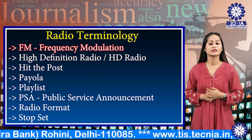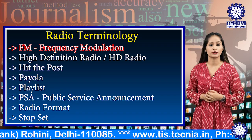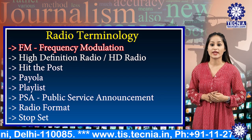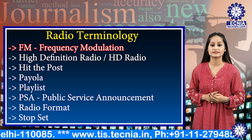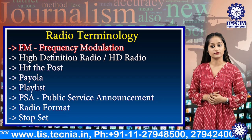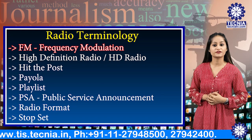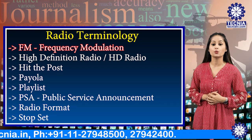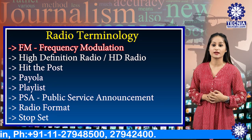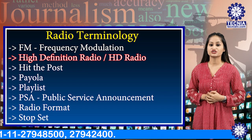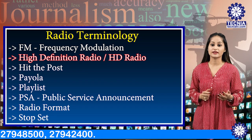FM — frequency modulation — is a broadcast that varies the frequency of the waves and requires an FM receiver. The FM frequency range is 88 to 108 MHz.